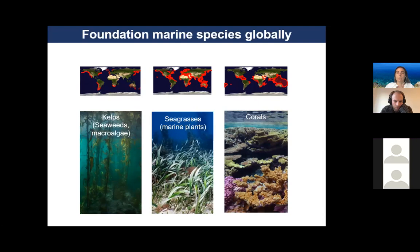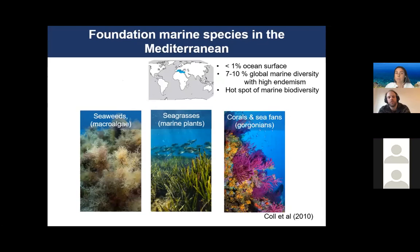These species also occur in the Mediterranean Sea. They are endemic and pathognomic species but belong to the same group. The Mediterranean Sea covers less than 1% of the total ocean surface, but presents around 7% to 10% of the global marine diversity, with high endemism — meaning species that only occur in the Mediterranean and nowhere else.